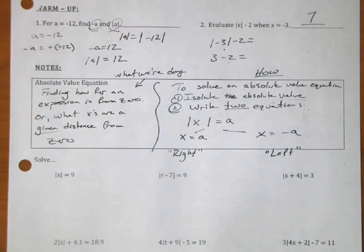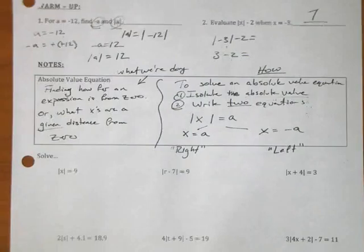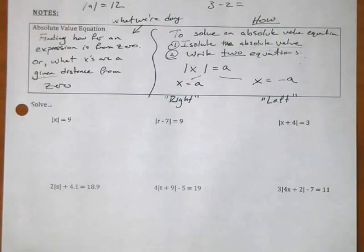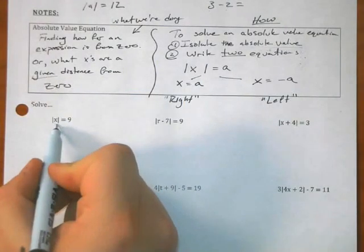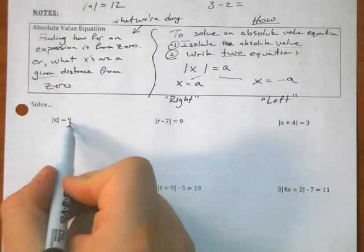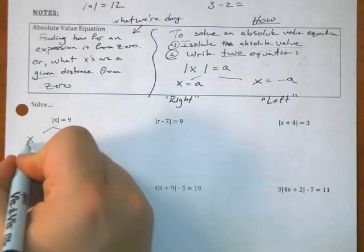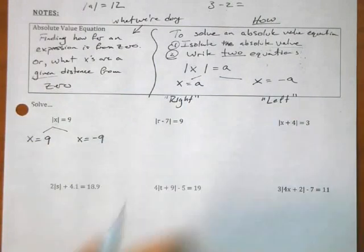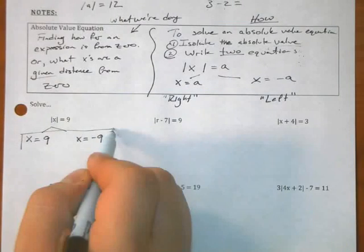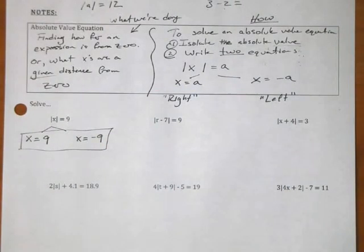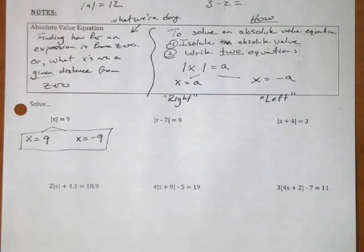For our first example: if the absolute value of x equals 9, once we've gotten the absolute value by itself, we say: what x's are 9 away from 0? Following the procedure, we write two equations — what's inside equals positive 9, or what's inside equals negative 9. I've already got x by itself, so that's it — two answers. Why are there two answers? Negative and positive. Why negative and positive? Because it's the distance from zero. You can either go to the right or the left.